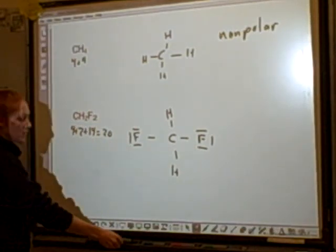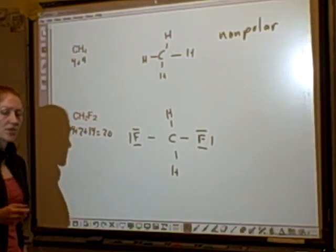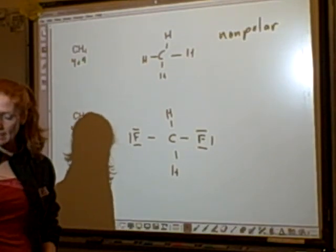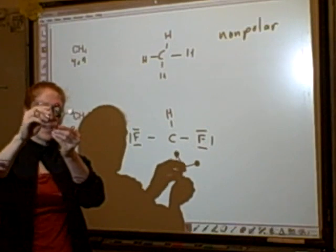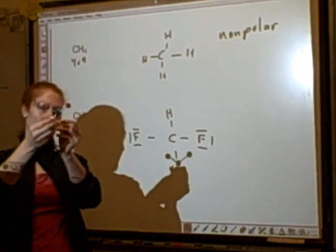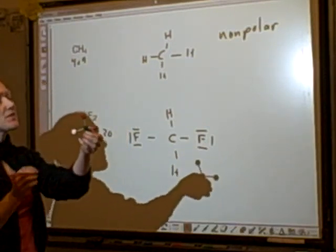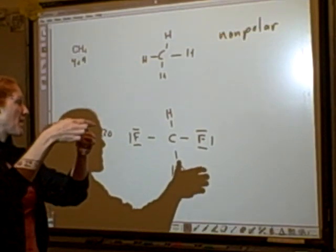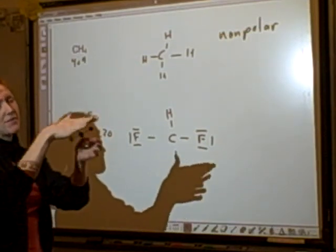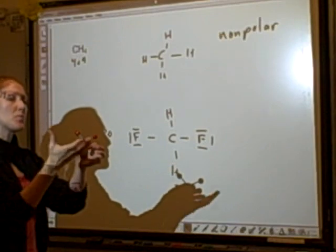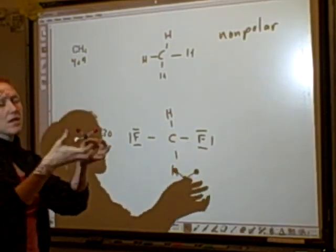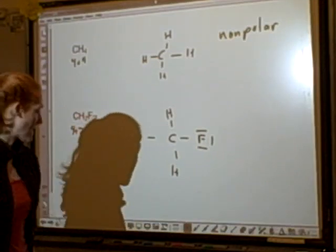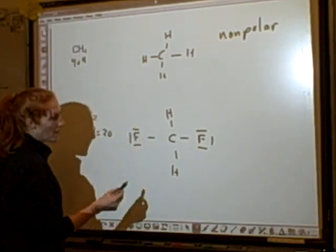Sure looks symmetrical, but I know that this is tetrahedral. I know tetrahedral is not actually flat. So when you're looking at it like that, it kind of looks symmetrical, but it's not. So this guy has the fluorines on one side, the hydrogens on the other. So you're going to have those really electronegative fluorines pulling the electrons towards them, drawing the electrons towards them, making a negative end here and a positive end there. So this guy is polar.